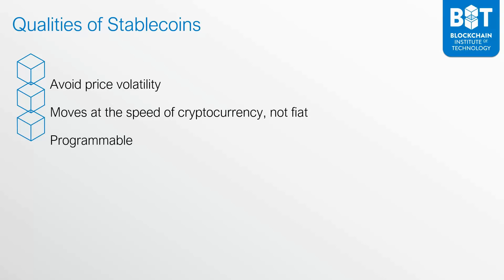One key thing is that stable coins are also programmable, which dollars, for example, are not. What that means is that if you have a smart contract and you want to process a payment to someone else, instead of processing that payment in a cryptocurrency like Ether or Bitcoin — which fluctuates up and down — if you have a stable coin, you could process that payment pegged to the US dollar. So if you need to issue a payment of $50, you could issue $50 worth of that US dollar-pegged stable coin. As a result, you're able to program into smart contracts the value of a stable coin instead of worrying about using a cryptocurrency that fluctuates in value.